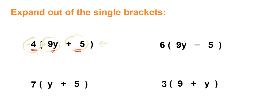So here's how it works: 4 times 9y. So 4 times 9y is 36y. Now why is that 36y?